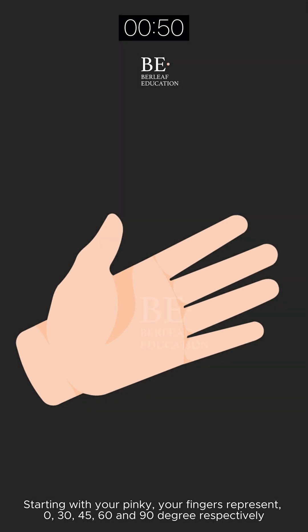Starting with your pinky, your fingers represent 0, 30, 45, 60, and 90 degrees respectively.